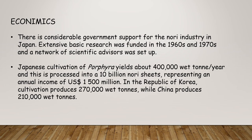There is considerable government support for the nori industry in Japan. Extensive basic research was funded in the 1960s and 1970s, and a network of scientific advisors was set up. Japanese cultivation of Porphyra yields about 400,000 wet tons per year, processed into 10 billion nori sheets, representing an annual income of US $1,500 million. In the Republic of Korea, cultivation produced 270,000 wet tons, while China produced 210,000 wet tons.